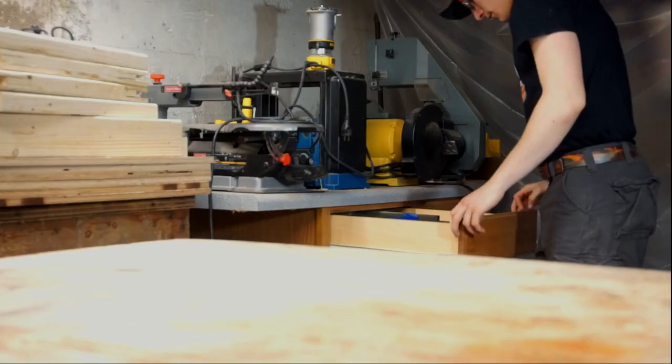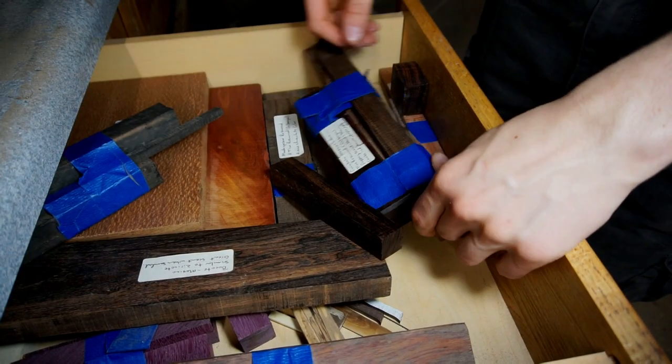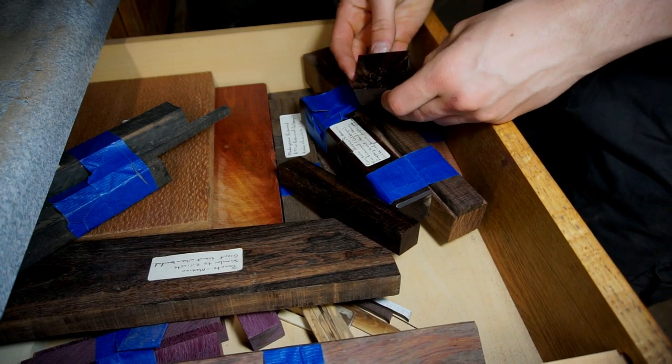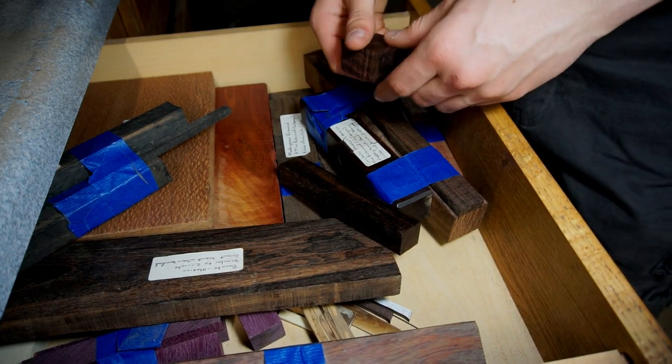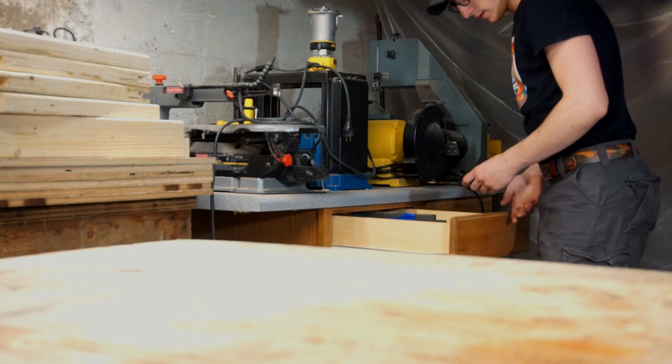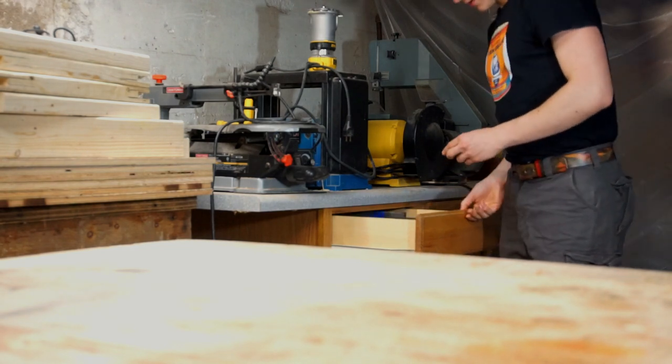In the previous video, I noticed that the Cocobolo we made the marking knife handle out of looked beautiful with the bookmatch. I thought making a bookmatched necklace might look really nice.